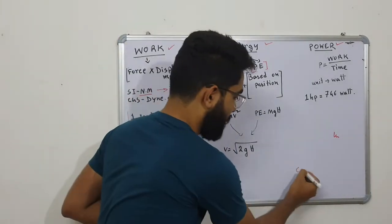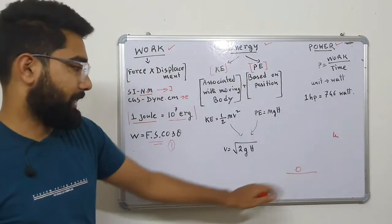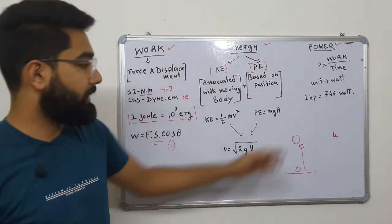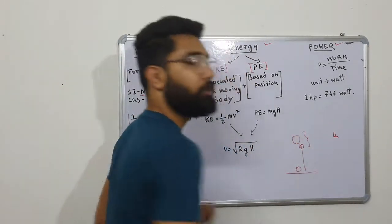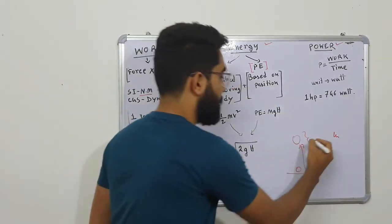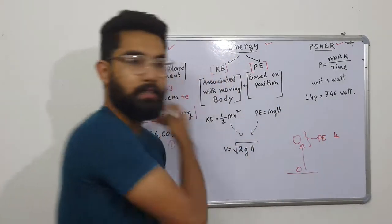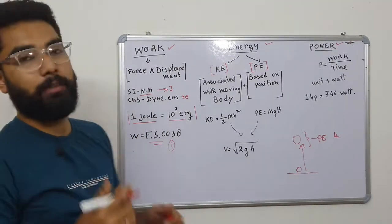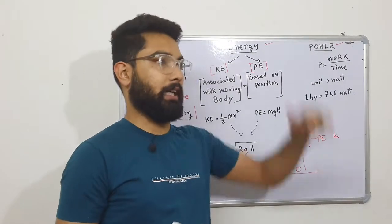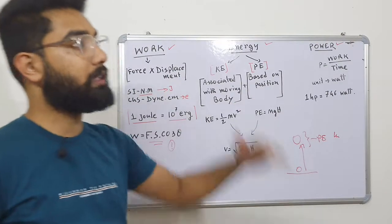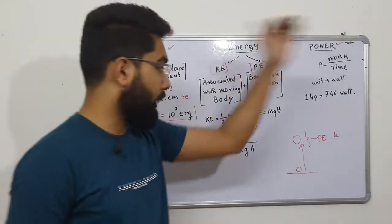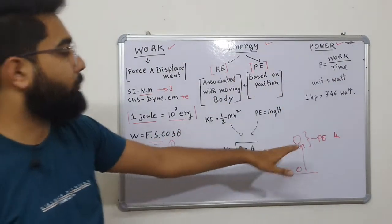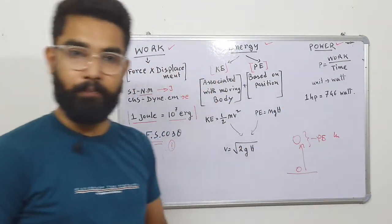When a ball is lifted up, we don't have this displacement at ground level. Therefore, there is a lot of stored energy. This energy is called potential energy. When we are at the ground floor, we have the power of potential energy.